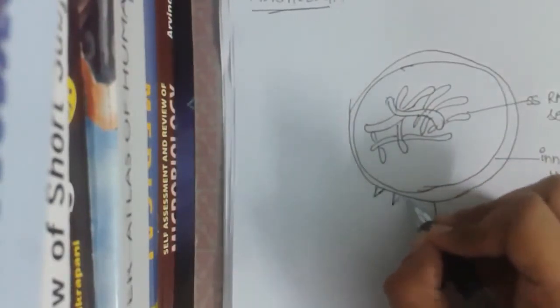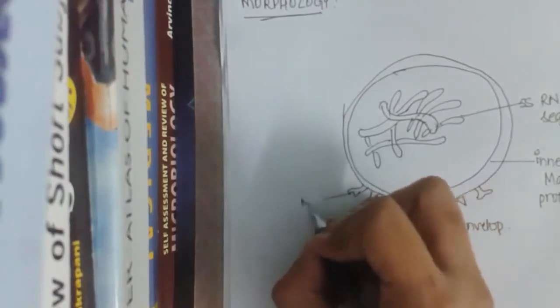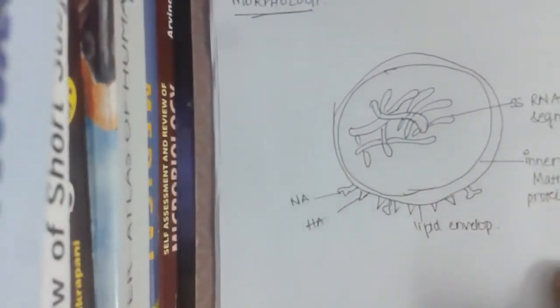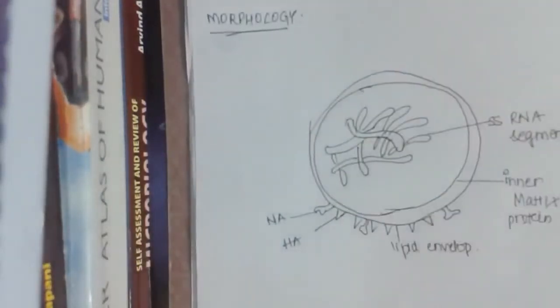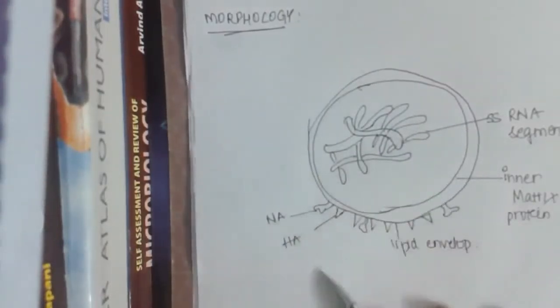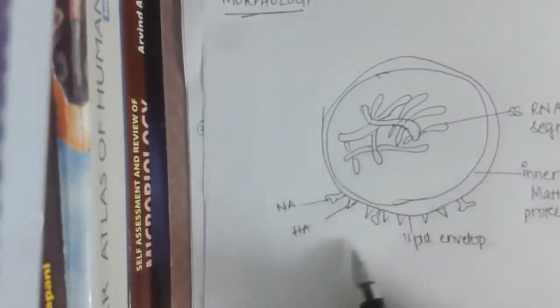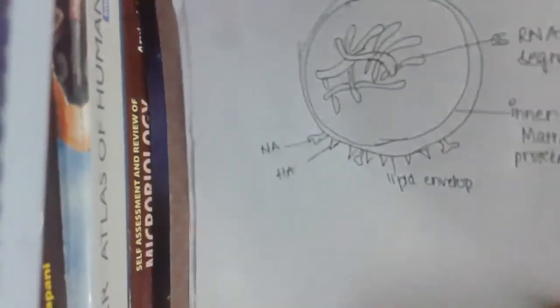On the surface of this lipid envelope, there are triangular hemagglutinin and mushroom-shaped neuraminidase. These are present all over the surface. This is the major structure of orthomyxoviruses. It contains an RNA genome with many segments — three, four, five, six, seven, or eight — based on the different types of viruses. It is covered by an inner matrix layer and an outer lipid envelope, with hemagglutinin (triangular) and neuraminidase (mushroom-shaped) on the surface.